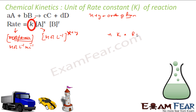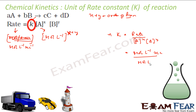So K is nothing but rate divided by [A]^X [B]^Y. Writing the units: K = (moles per liter per second) divided by (moles per liter)^(X+Y), where X + Y is the order of reaction.